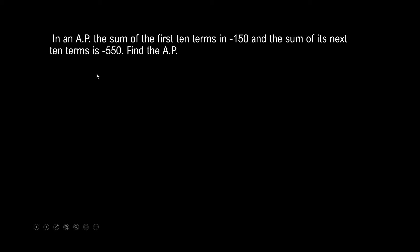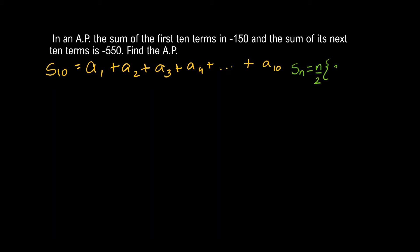Now coming to the challenge questions. The first challenge question: In an AP, the sum of the first 10 terms is minus 150 and the sum of its next 10 terms is minus 550. You have to find the arithmetic progression — the sequence of numbers. The formula we'll use is Sn = n/2 × (2a + (n−1)d). We assume the sequence is a1 + a2 + a3 ... up to a10.